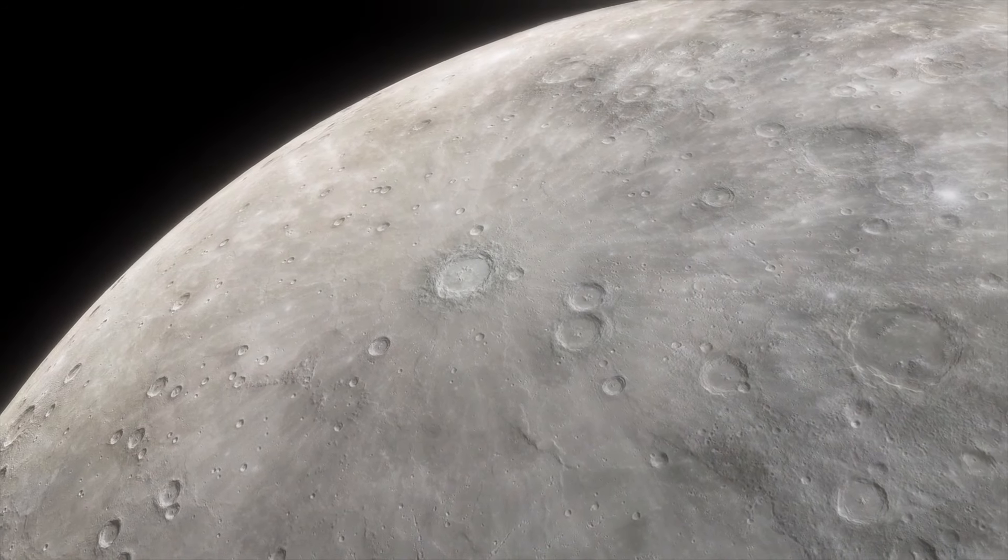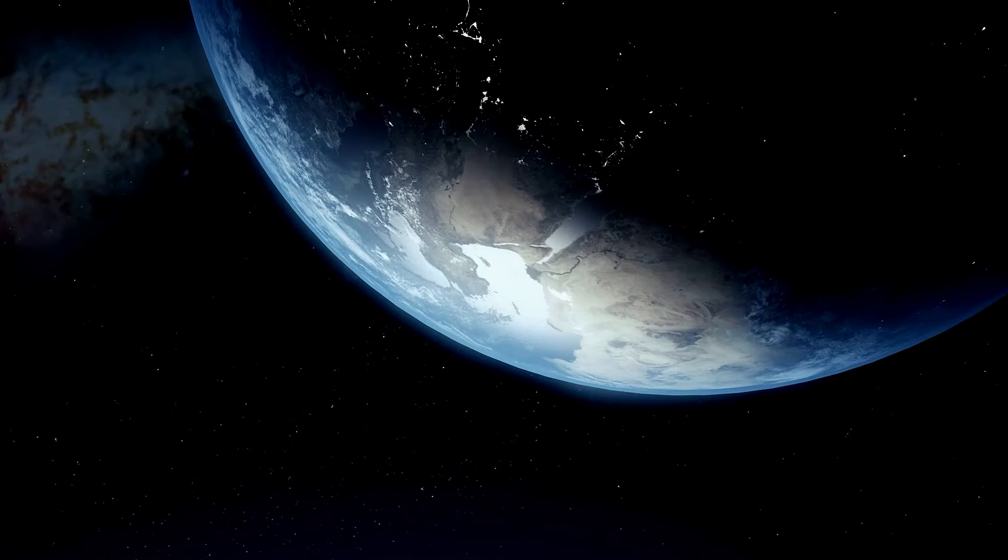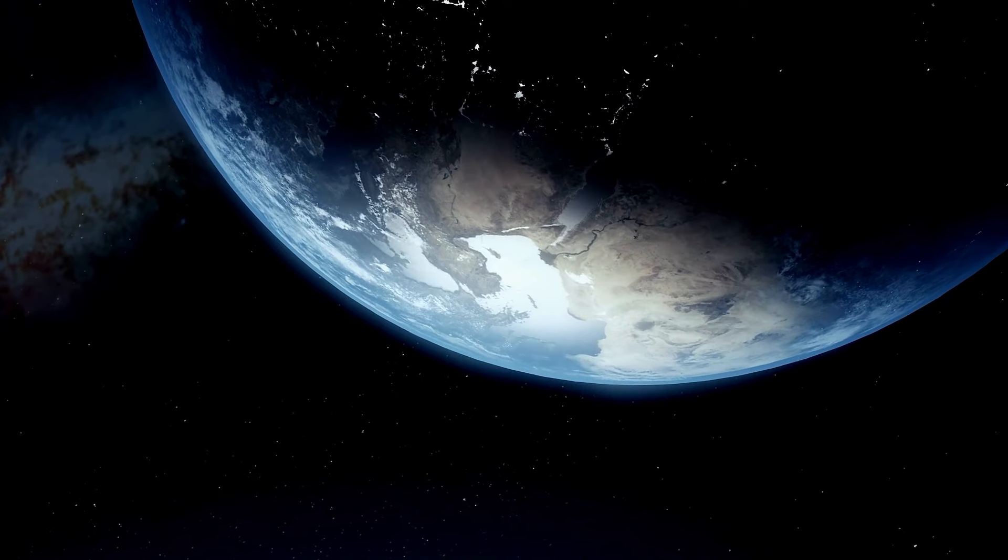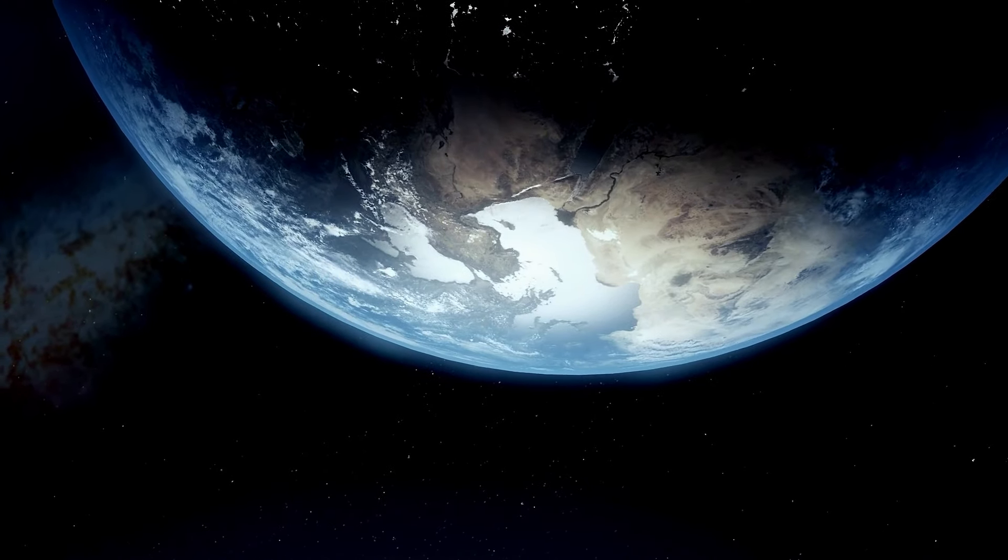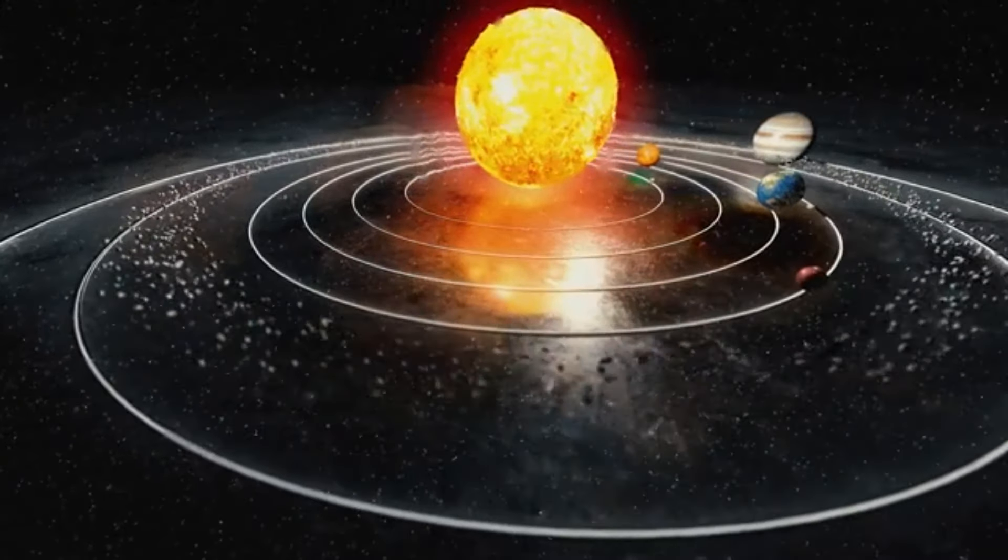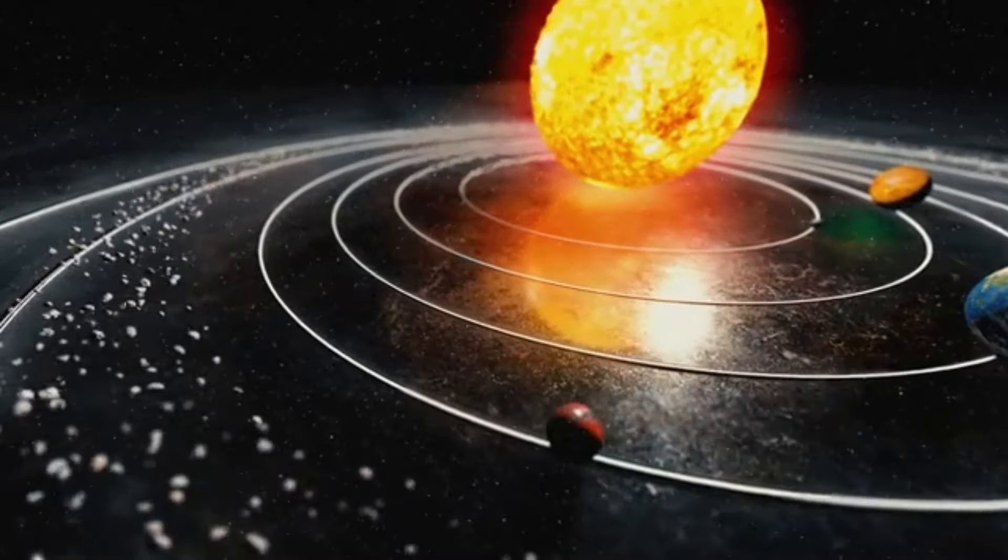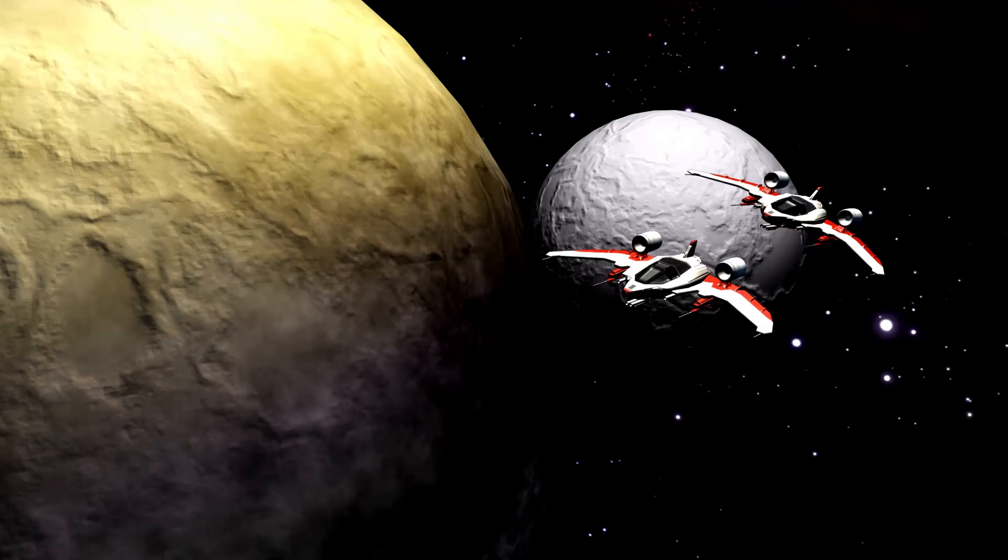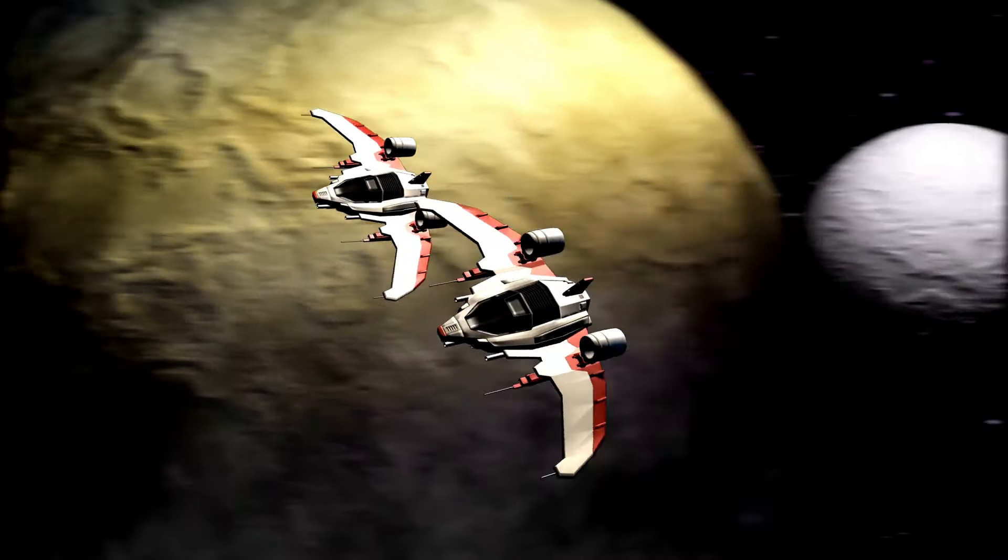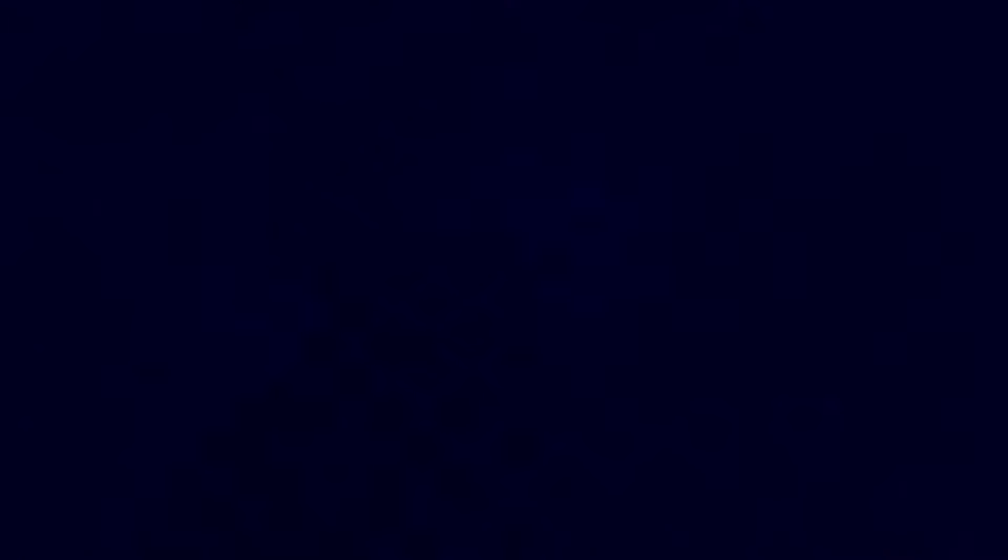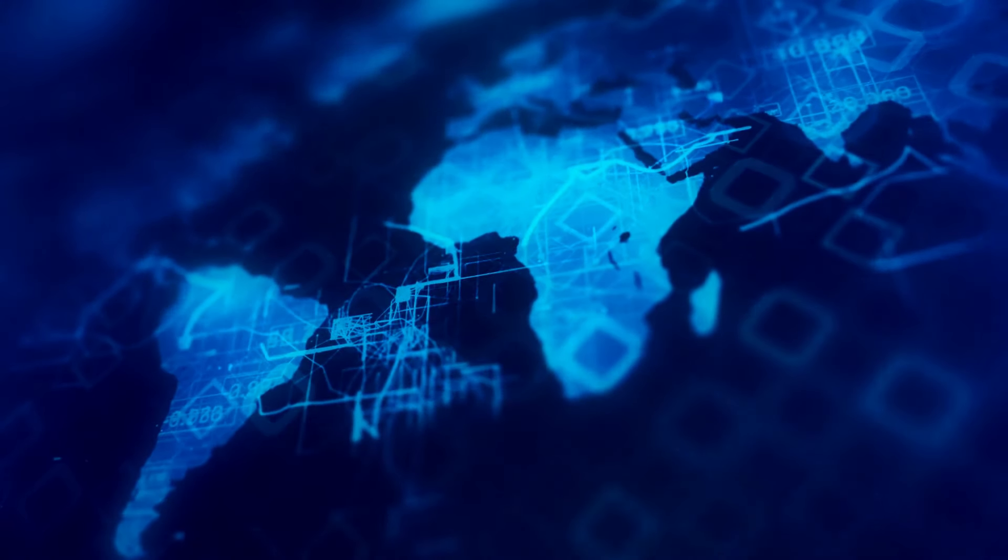Kaku sees the study of Pluto and its orbit as a window into the future of space exploration. He believes that understanding the complex gravitational interactions and orbital dynamics of celestial bodies like Pluto can provide crucial insights for future space missions. This knowledge can aid in navigating the solar system more effectively, predicting potential hazards, and even planning missions to the outer reaches of our solar system and beyond. Kaku emphasizes that the lessons learned from studying Pluto's orbit can be applied to explore other celestial bodies, offering a blueprint for how we might approach and understand distant worlds.